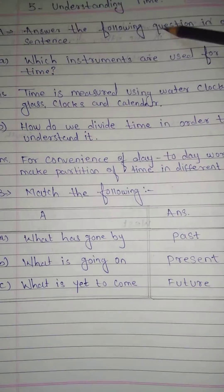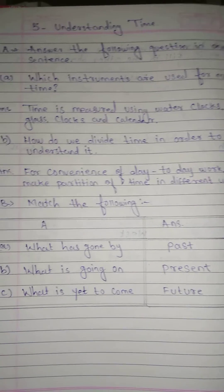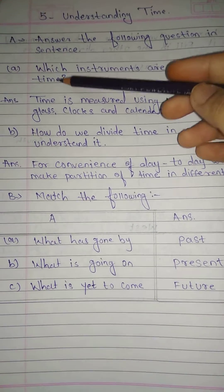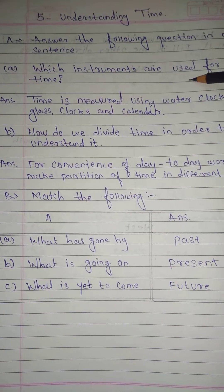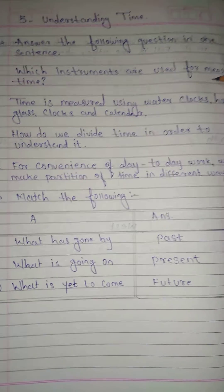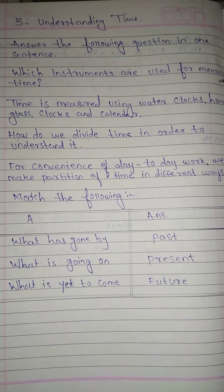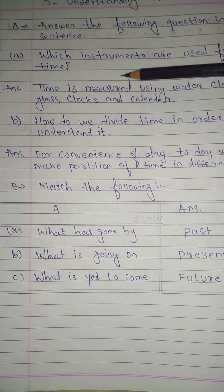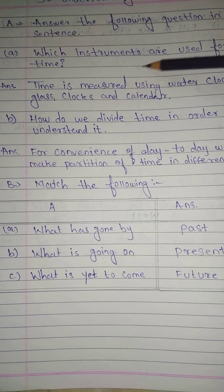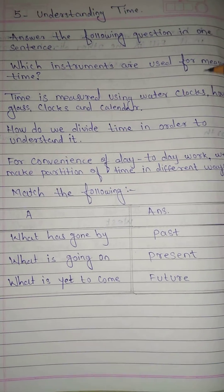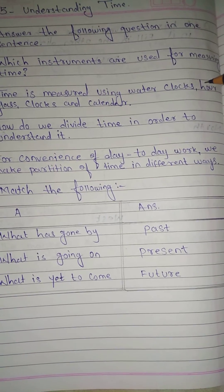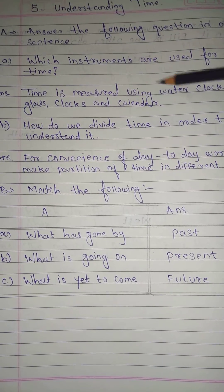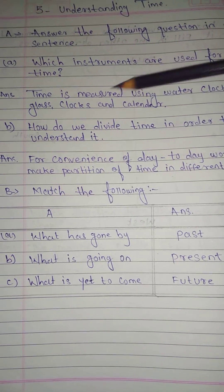Answer the following question in one sentence. A. Which instruments are used for measuring time? Answer: Time is measured using water clocks, hourglass clocks, and calendar.